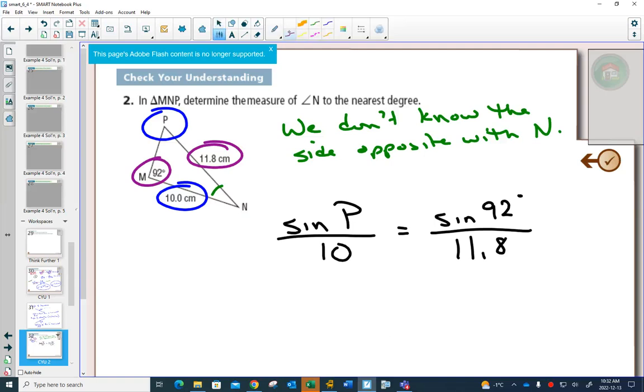At this point, it is not hard to get sine of P by itself. You would have to multiply by 10 and multiply by 10. These 10s would simplify, and we would get sine of P by itself. If I type that into my calculator, I get 0.8469.